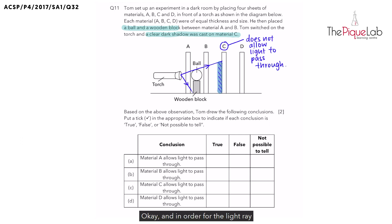In order for the light ray to actually travel to be blocked by material C, as you can see, we notice that the light was able to pass through A and also pass through B in order to reach C. So what does that tell you about the transparency of A and B? Material A and material B do allow light to pass through.